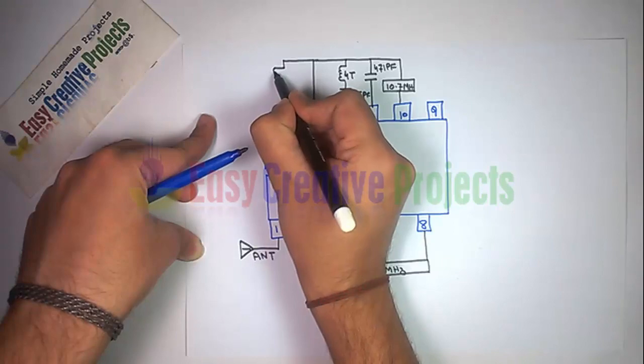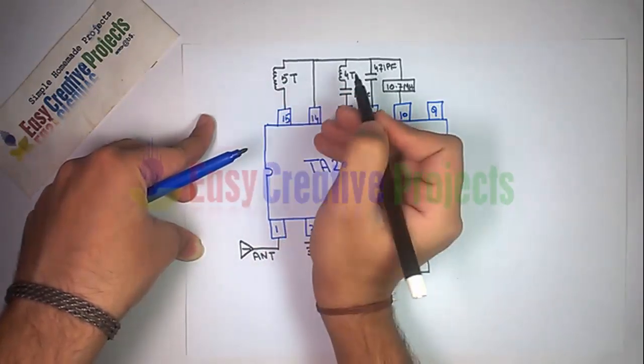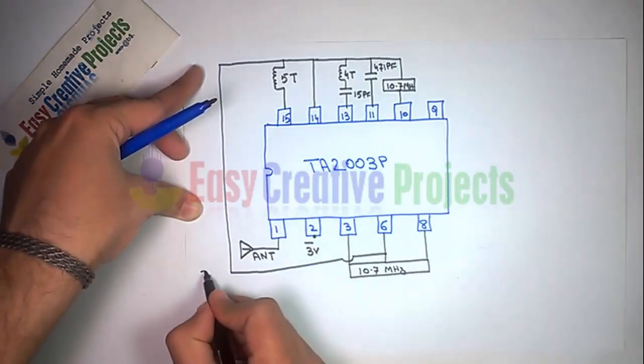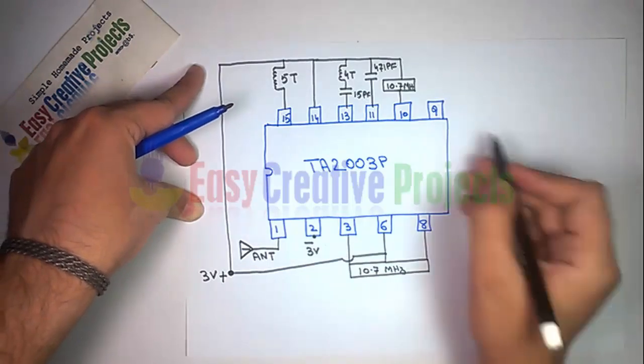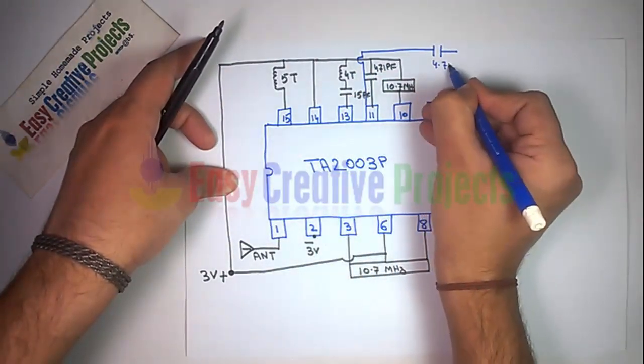Now connect 5-turn coil with pin 15 and positive wire. Pin 6 use for 3-volt power supply. Now connect 4.7 microfarad capacitor with pin 11.